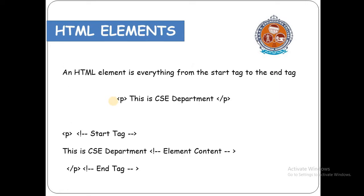Coming to HTML elements — an HTML element is everything from the start tag to the end tag. For example, this is the starting P tag, and this is the ending tag surrounded by one forward slash. In between these two tags is the actual content. This total thing — from starting tag to ending tag with the data in between — is called an HTML element.